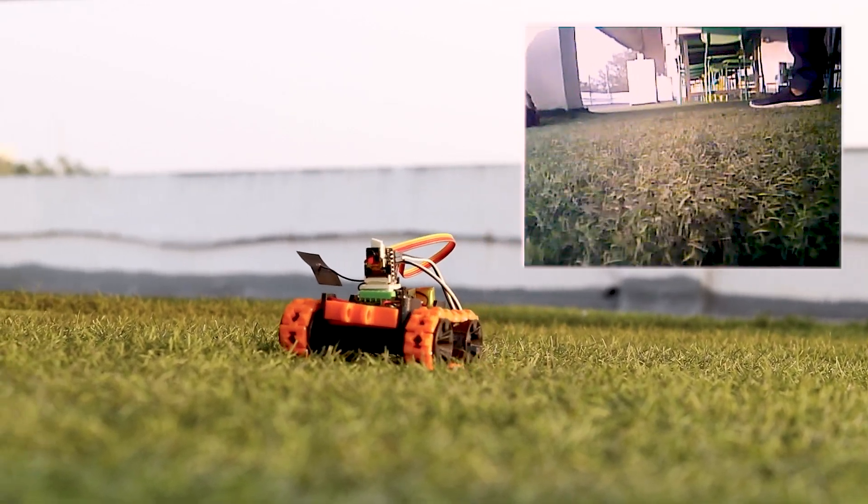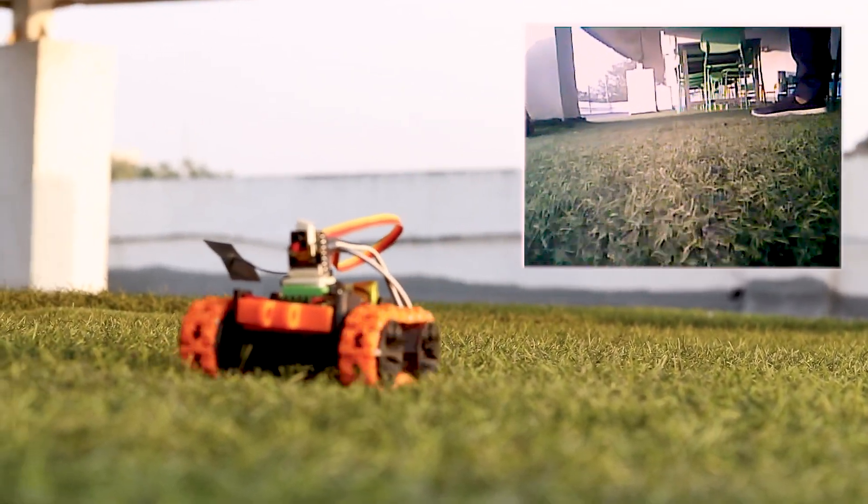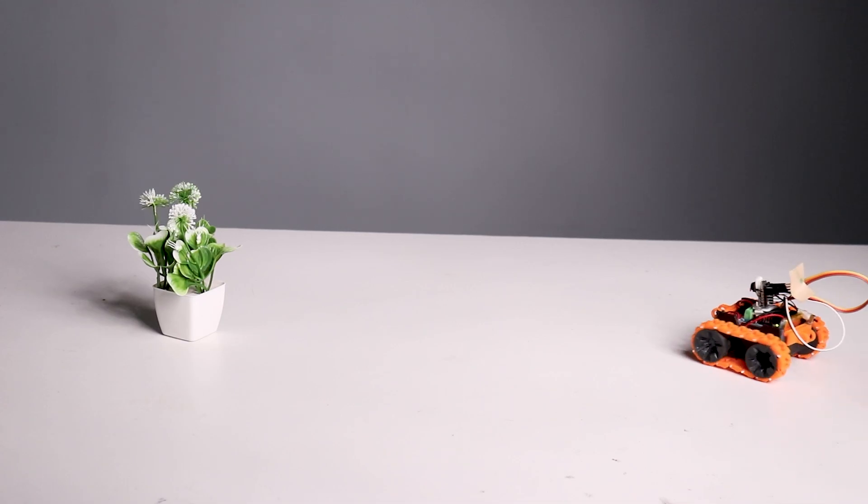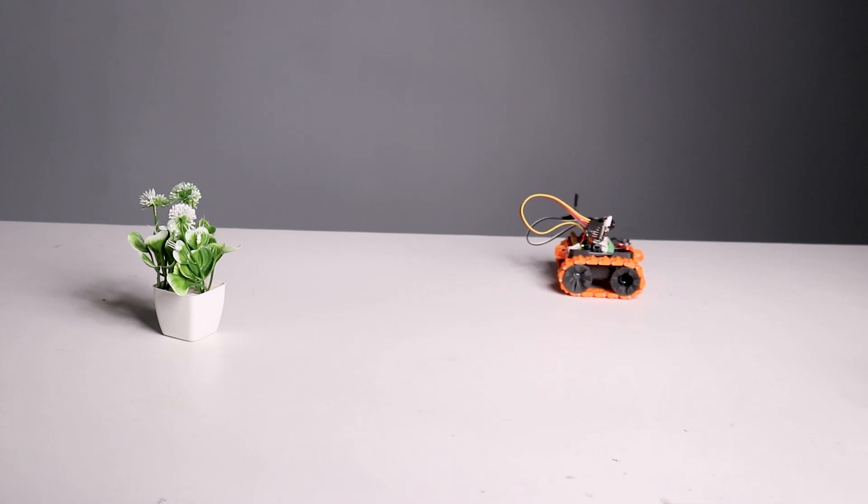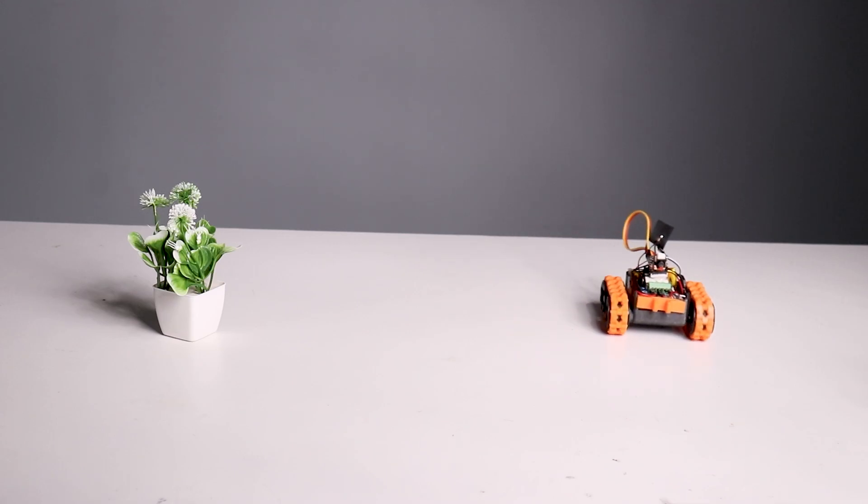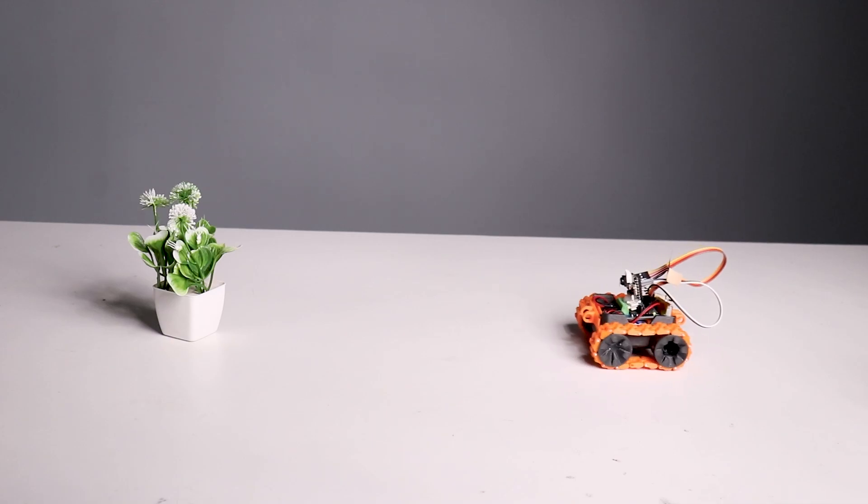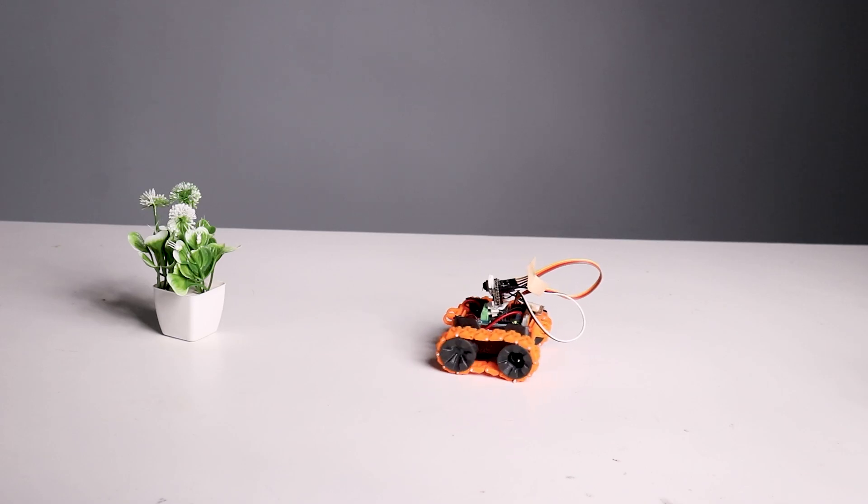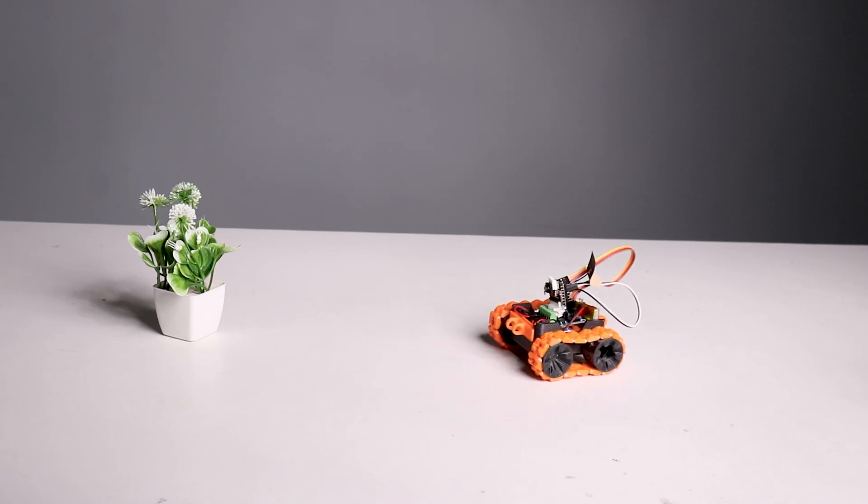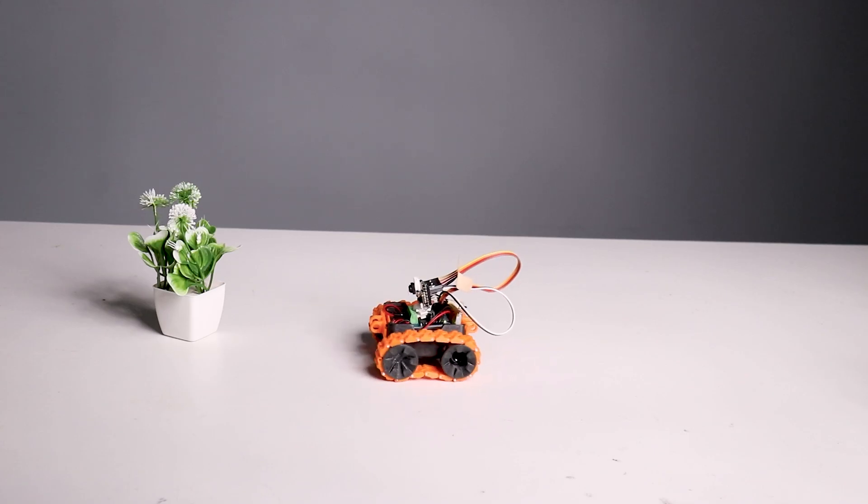Yeah, we can see that it's moving and showing us the stream. So that's how you can make your own FPV robot tank.